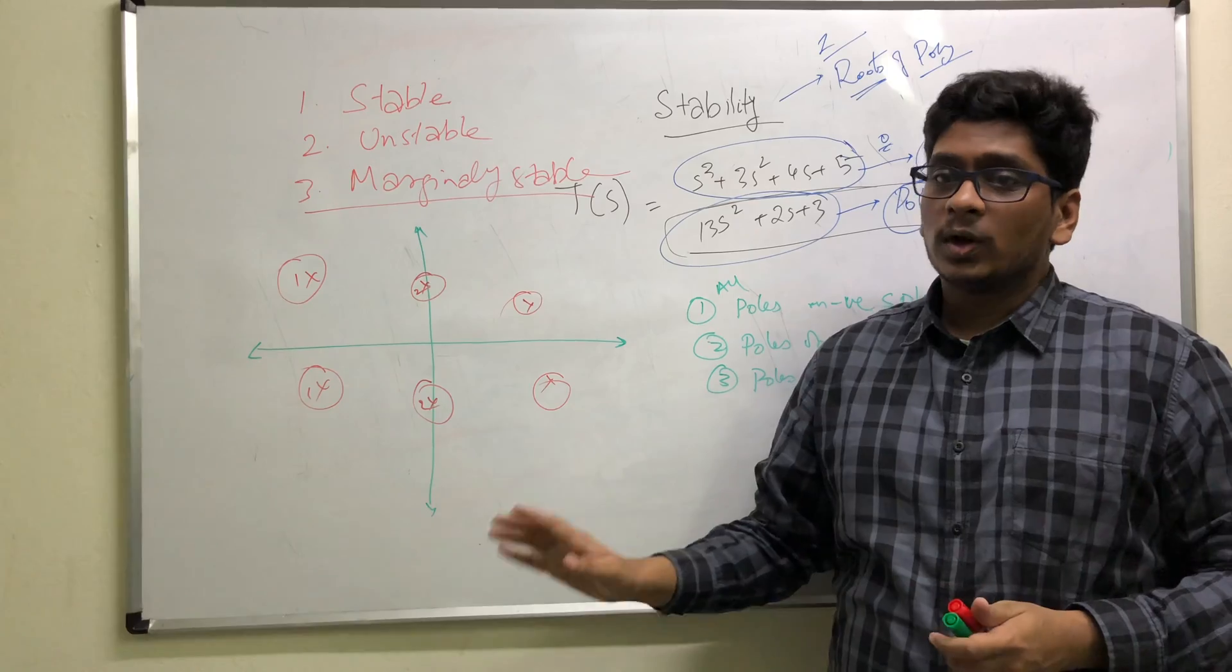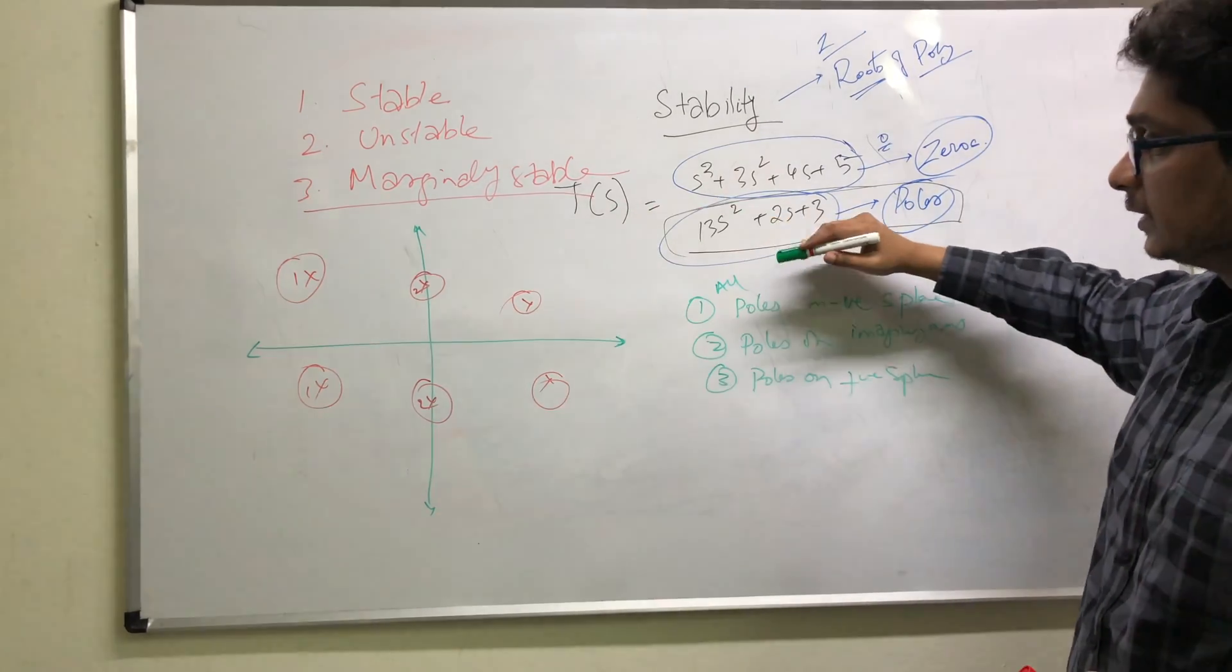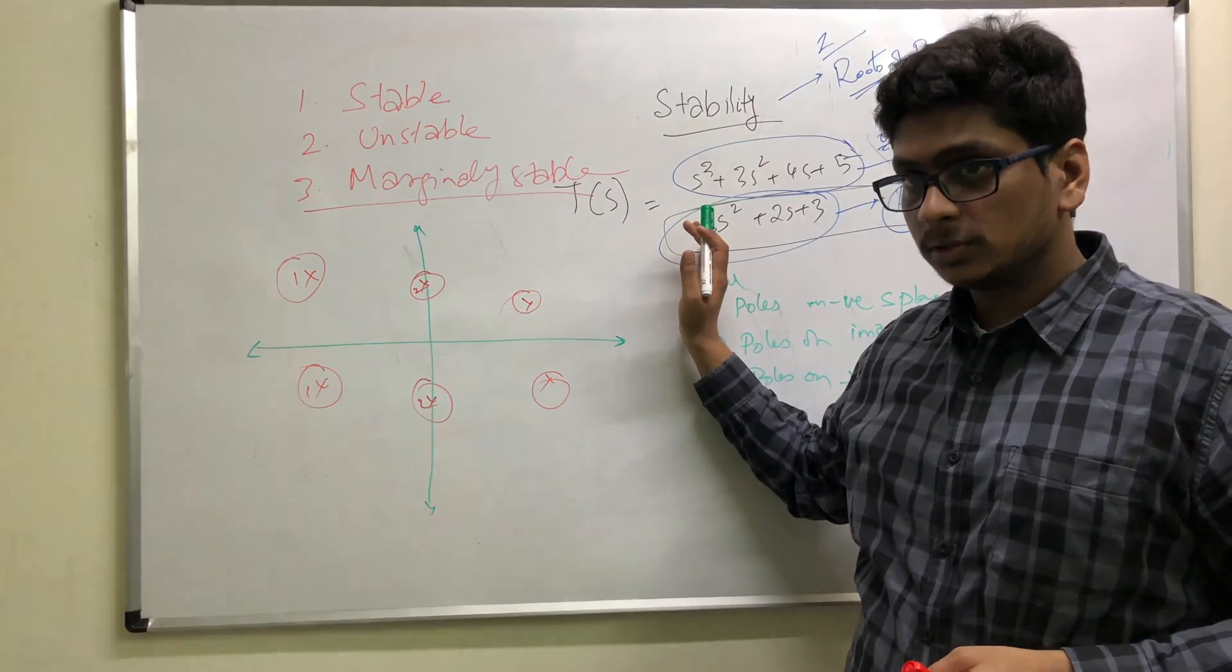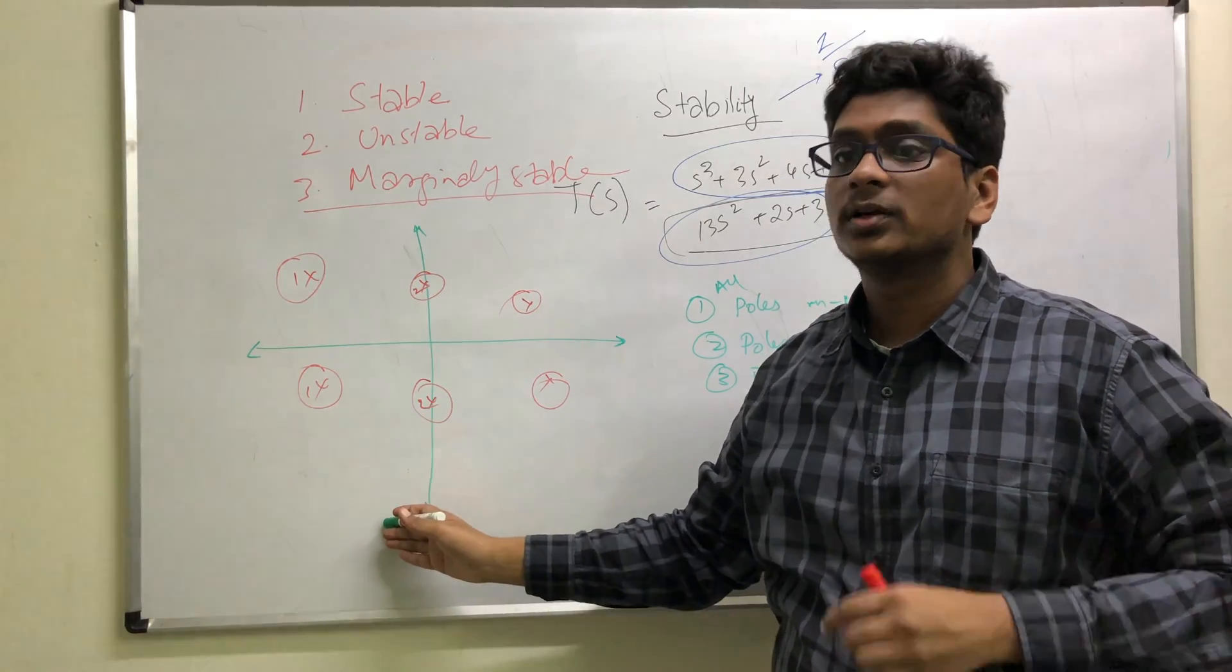So if you have a transfer function, there is a denominator. The roots of the denominator are called poles. If all the poles lie on the negative, stable.